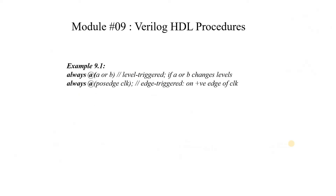Looking at some examples: always at A or B — if no positive edge or negative edge is mentioned along with the variable name, those variables are level-sensitive. So if any change happens on those variables, like changing from 0 to 1 or 1 to 0, this always block will execute. The second example is always at positive edge clock — whenever there is a positive edge on the clock signal, this always block executes. This is an edge-triggered block, while the first is a level-triggered block. To implement sequential circuits, flip-flops, or registers, we use edge-sensitive triggered always blocks. To implement combinational logic, we use level-sensitive signals in the sensitivity list.